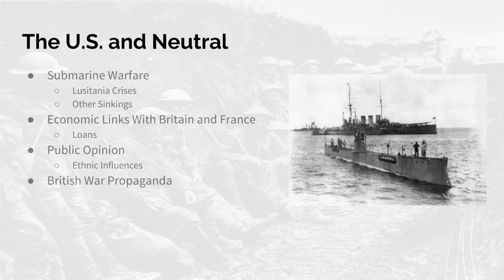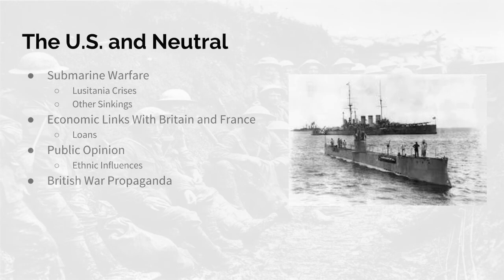One example was the Lusitania crisis. The Lusitania was a British civilian passenger ship traveling through the Atlantic. On May 7, 1915, the Lusitania was carrying a few hundred passengers — 128 of them were Americans — and those 128 Americans were killed. Wilson warned the Germans, along with William Jennings Bryan, that if this were to happen again, he would cut off relations with Germany. Secretary of State William Jennings Bryan did not like this and resigned from Wilson's cabinet.